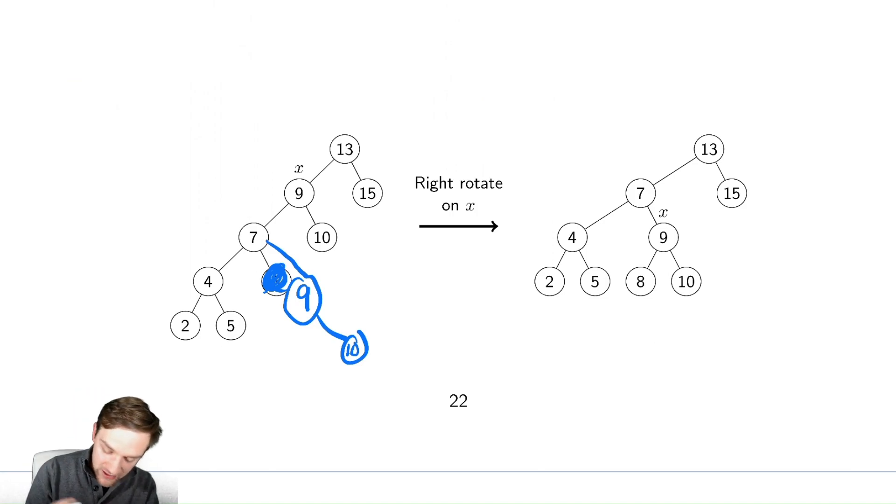And now where must eight go if I was to do this? Well, if I do that, there's only one valid location for eight. It's less than 13, less than seven, and then it is less than nine. So it must go here.